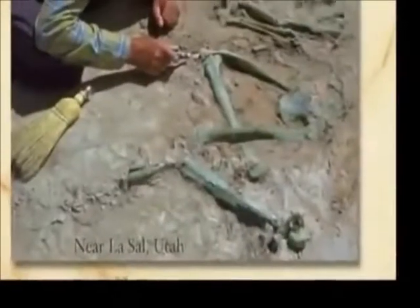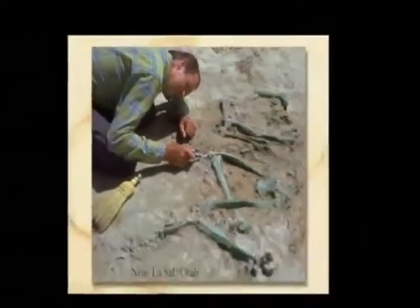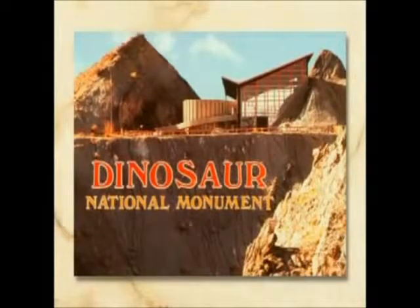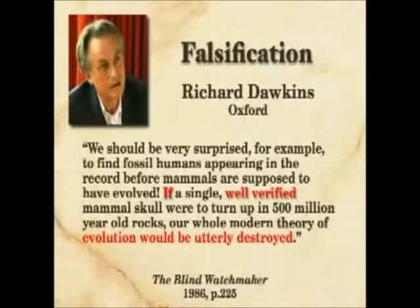One very obvious and dramatic example is near La Salle, Utah, where perfectly modern human skeletons replaced with malachite are found in a layer also found at Dinosaur National Monument — known for its dinosaurs in the Dakota Sandstone. The key phrase in Dawkins' statement is 'well-verified,' and when you find it, it's not going to be verified. It must have fallen down a crack, or they crawled back in a cave, or it's a mine collapse — any kind of explanation, with no evidence required. You know dinosaurs didn't live with humans — they were 100 million years apart — so if you find them together, something bad happened.